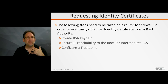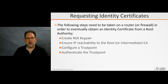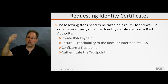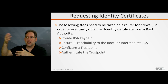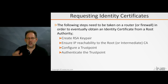Then you'll go ahead and configure the trust point. A trust point is another name for a certificate authority. You will authenticate against the trust point — during authentication you're reaching out to the certificate authority and saying, hey, I need your certificate. If I'm going to trust you and tell everybody else they need to trust you, I need to get your identity certificate, Mr. or Mrs. Certificate Authority. Then you download the self-signed certificate of the root CA. So that's the authentication stage.